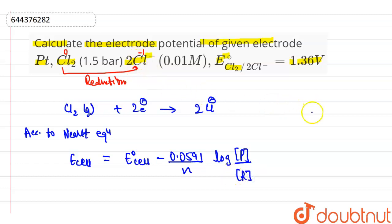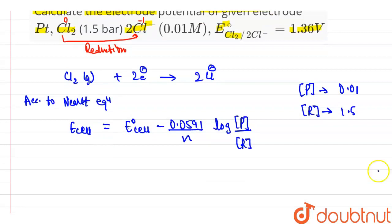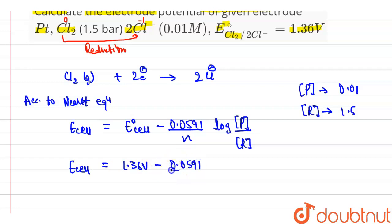In this question, the concentration of product is 0.01 and the concentration of reactant is 1.5. Now putting in the values: E° cell is 1.36 volt, minus 0.0591 divided by N. Here the gain of electrons and loss of electrons is equal to 2, so N = 2. Divided by 2, log of the concentration of product over reactant.